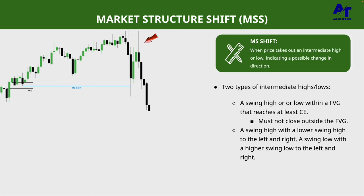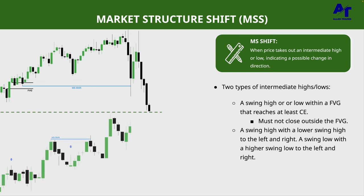We take out that low, giving us a market structure shift indicating a possible change in direction — we were bullish before, now we might be going lower. Price takes that out, goes higher into a fair value gap and an order block, also accompanied with a wick — three different key levels right there. We also have an inversion fair value gap. We go up into a key level and then start to trade lower, showing how a market structure shift can indicate price may be going in the other direction.